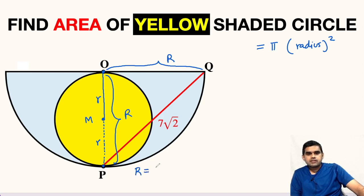Capital R is equal to twice this small radius small r. Now focus on triangle OPQ.